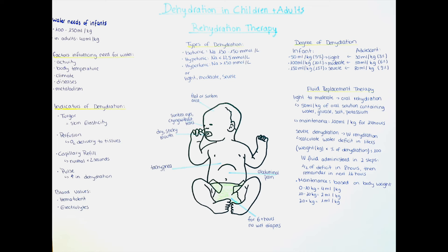Now let's say this patient rather needs IV fluid replacement therapy — for example, if he is not able to swallow oral rehydration therapy. For that, we need to determine the water deficit in liters. We do this by multiplying the weight in kilograms by the percentage of dehydration, then dividing by 100. Our patient is 75 kg with 6% water loss: 75 times 6 is 450, divided by 100 gives us 4.5 liters water deficit. We administer half of the water deficit during the first 8 hours, then the remainder over the next 16 hours, not accounting for ongoing losses.